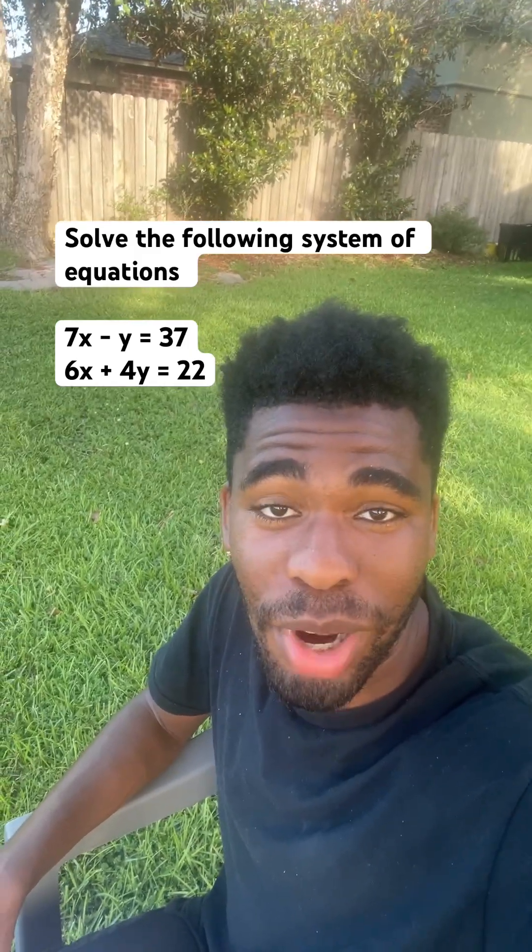Solve the following system of equations. Alright, so the system we got is 7x minus y equals 37, and 6x plus 4y equals 22.